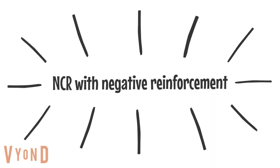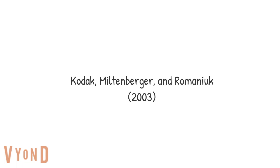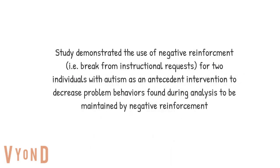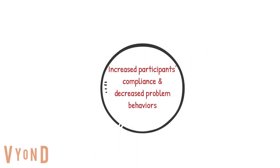In a 2003 study by Kodak, Miltenberger, and Romaniuk, they used negative reinforcement — a break from instructional requests — for two individuals with autism as an antecedent intervention. This decreased the problem behaviors that were maintained by negative reinforcement or escape. They gave breaks from demands on a non-contingent reinforcement schedule, which increased compliance and decreased problem behaviors.